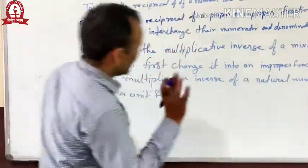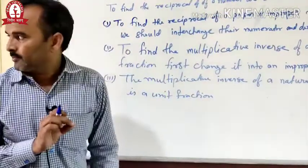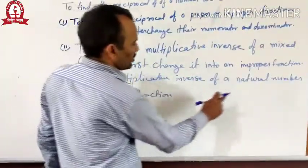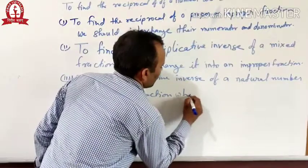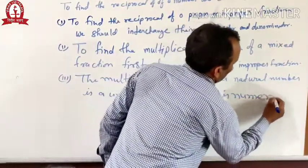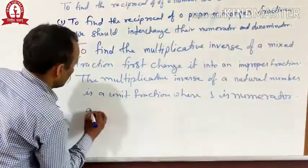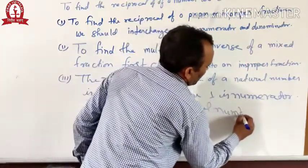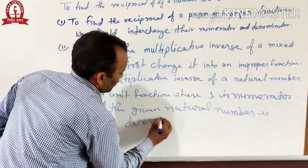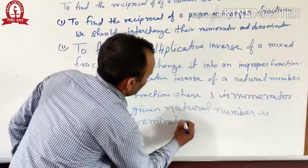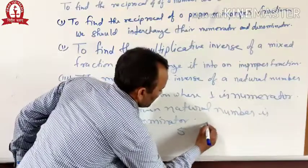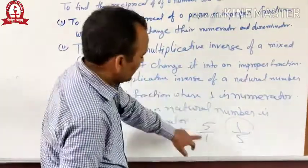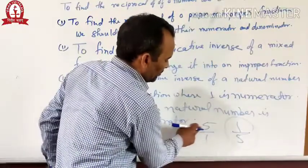The reciprocal of every natural number is a unit fraction. So the multiplicative inverse of a natural number is a unit fraction where 1 is the numerator and the given natural number is the denominator. For example, 5 means 5 by 1, and the reciprocal of 5 by 1 is 1 by 5. Here 1 is the numerator and the number itself is the denominator.